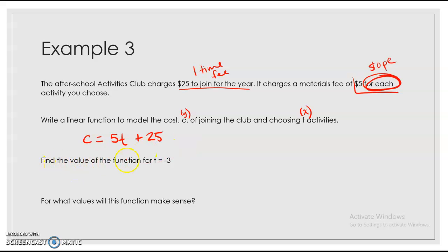So now it wants us to find the value of the function if T equals negative 3. And so all that means is plug negative 3 in for T. So C will equal 5 times negative 3 plus 25. And so that would be negative 15 plus 25. So C will equal 10. And so that's $10 when T is negative 3.